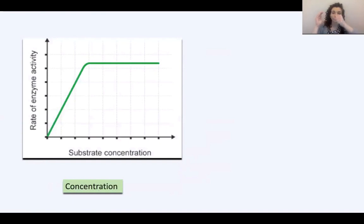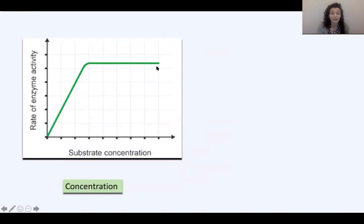'Plateau' is a really good word to describe that flat part of the graph. The plateau happens because the number of substrate molecules has increased but the number of enzymes has stayed the same — you've saturated all the enzymes. All of those active sites are filled up, so if you increase substrate concentration any more the reaction can't happen any faster because there aren't any free enzyme active sites. Substrate concentration increases the rate up to a maximum, then it plateaus. Pause the video, sketch out this graph of rate of enzyme activity against substrate concentration, and if confident try to label and explain what's happening at different points.